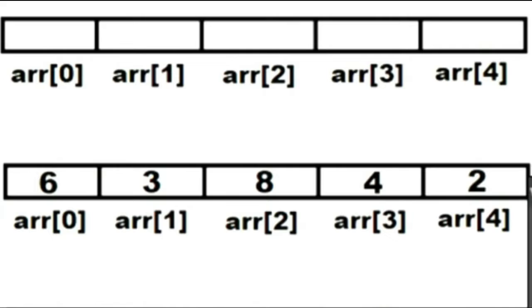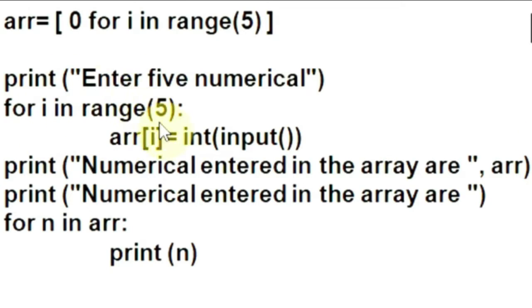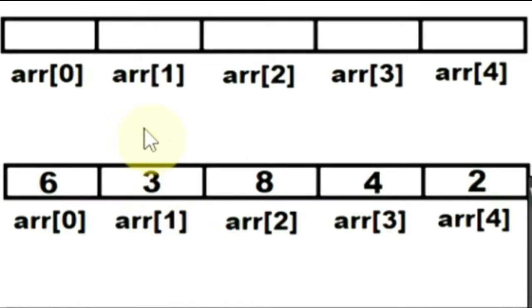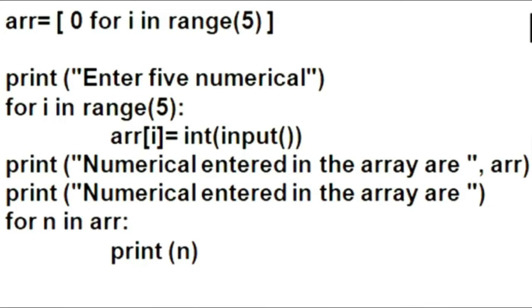So, suppose the user enters value 6. It will be converted into integer and will be assigned to arr[0] location. Then after the value of i will increment to 1. The next value that user enters suppose 3. It will be assigned to arr[1] index location. The value of i will increment to 2.